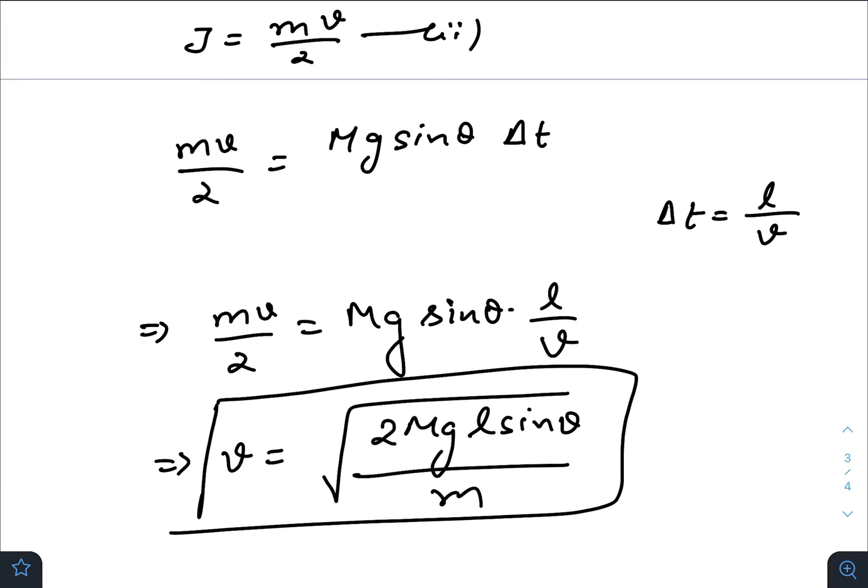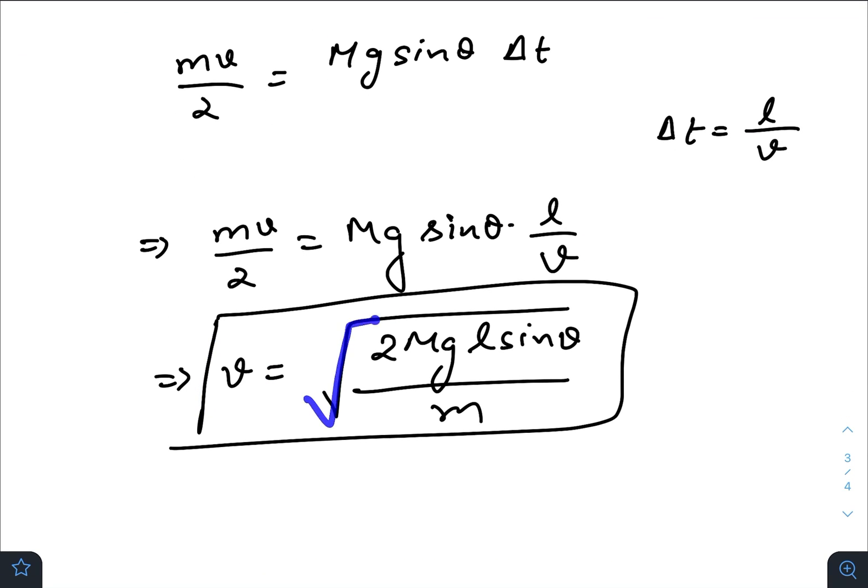Δt is the time interval between two consecutive rollers hitting. That is, the distance between the two axes of two rollers is l divided by constant speed v. So just put the value of Δt here, l by v. So we get the expression for the steady state speed: v = √(2Mgl sin θ / m).